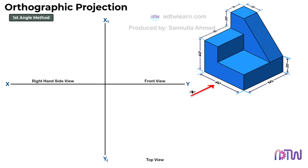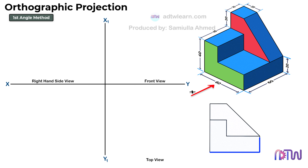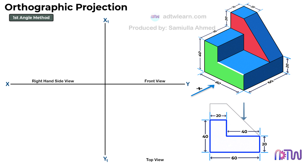When we view the object from direction x, this is how it looks. I will color the visible sides on the isometric view for your convenience. When we see the object from the front view, we will see this section. The width of this section is 60 millimeters, this height is 40 millimeters, this height is 20 millimeters, this width will be 20 millimeters since both widths are equal in length. This length will be 40 millimeters — since the total width is 60 millimeters, removing 20 millimeters gives 40 millimeters. And this height is 20 millimeters.